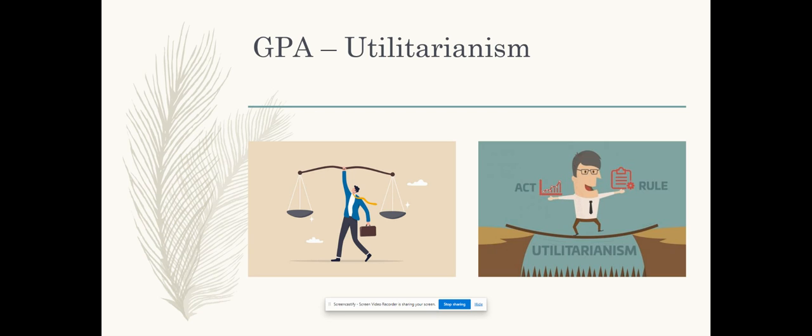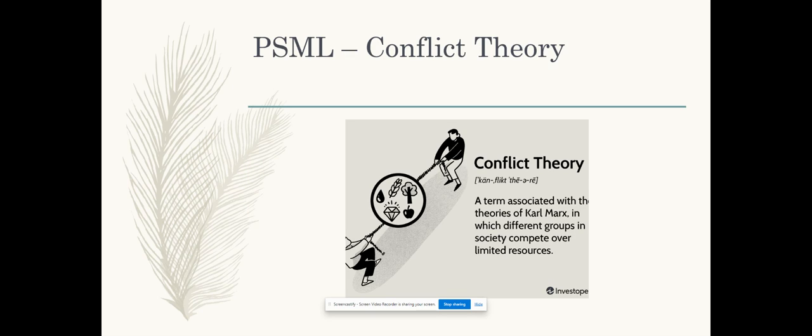With utilitarianism, an action is right if it tends to promote happiness or pleasure and wrong if it tends to produce unhappiness or pain, not just for the performer or the leader of the action but also for everyone else affected by that action. The leader's act or decision is to maximize happiness or pleasure and minimize unhappiness or pain. Utilitarianism heavily focuses on the consequences of an action. It aims to make the best impact on the overall happiness of the majority of the group.